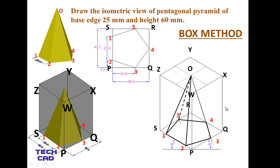The method used to make this isometric view is called the box method, because we use a box and place our solid inside it. We draw the box first at 30 degrees, then place the solid in between. I hope you understand this. Thank you everyone.